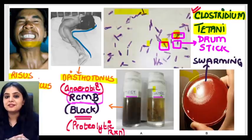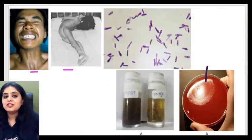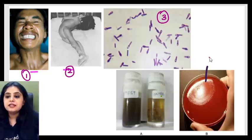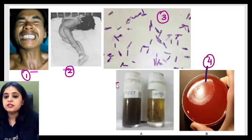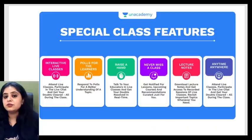Quick recap of all the images: Image 1 — risus sardonicus; Image 2 — opisthotonos; Image 3 — drumstick appearance of Clostridium tetani; Image 4 — swarming, also seen in other organisms; Image 5 — Robertson's cooked meat broth giving a black or proteolytic reaction. That's the end of the IOTD — Image of the Day.